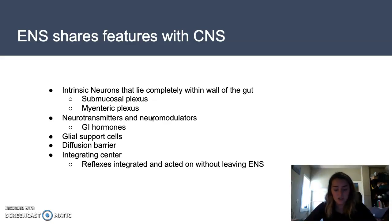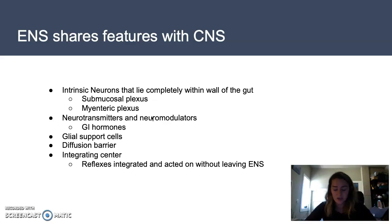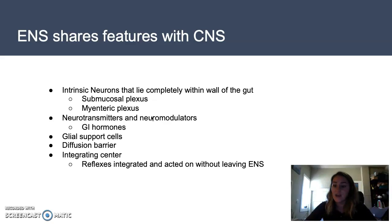In the outer muscular layer of the GI tract, you find the myenteric plexus — the second set of intrinsic neurons. This is a network that controls and coordinates the phasic circular and longitudinal muscle activity found within that layer of muscle.